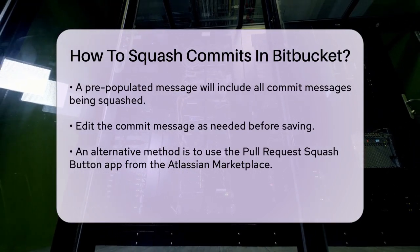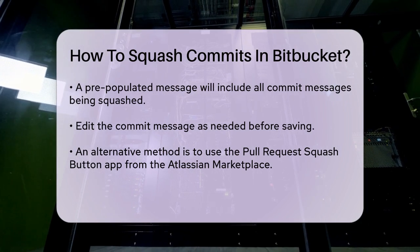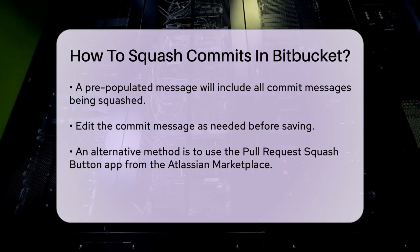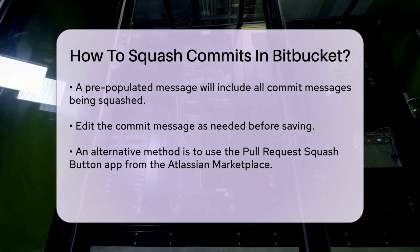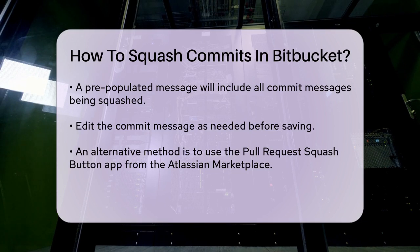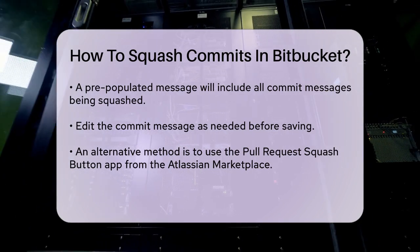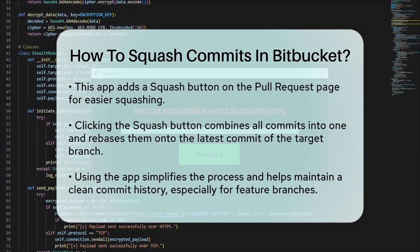Another convenient way to squash commits, especially within Bitbucket, is by using a squash button. There's a free app available on the Atlassian Marketplace called the Pull Request Squash Button for Bitbucket. This app integrates a squash button on the Pull Request page. When you click the squash button, it populates the first commit details and allows you to select the commit author for the pull request squashing. This process combines all commits, including mixed merge commits, into a single commit, rebasing them onto the latest commit of the target branch.